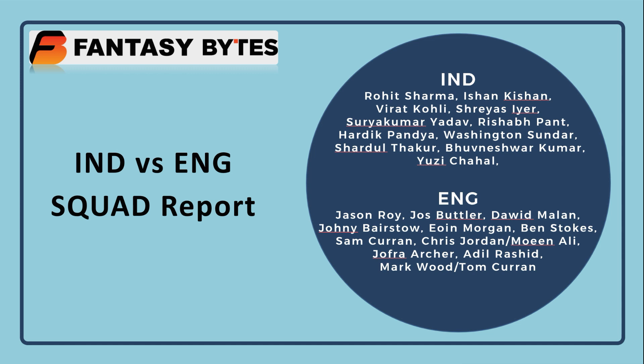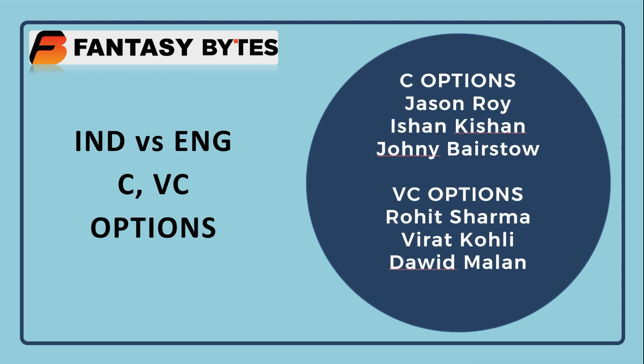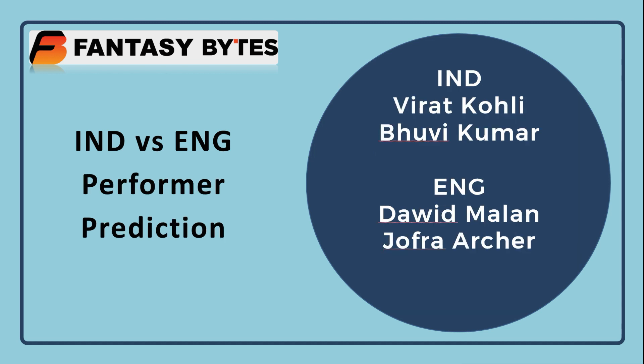Before moving on — most probably Rohit Sharma will come back into India's playing XI, maybe for KL Rahul. But it's possible Virat Kohli gives KL Rahul more confidence by picking him again and resting Rohit Sharma. If Rohit Sharma plays, he's a vice-captain option, as is Virat Kohli. David Malan as an innings builder is also a vice-captain consideration. My performer picks: Virat Kohli and Bhuvneshwar Kumar for India, bat and ball.